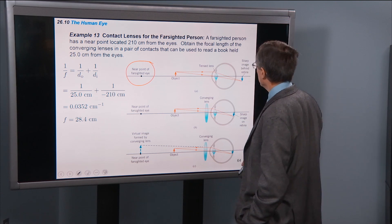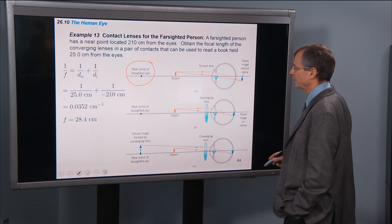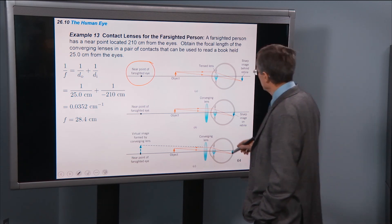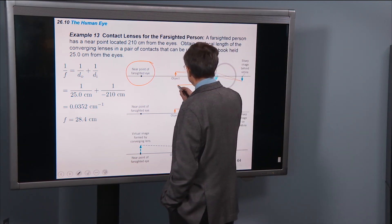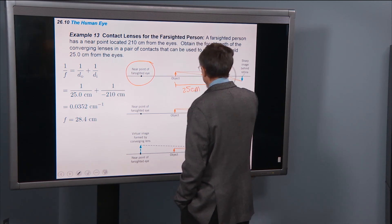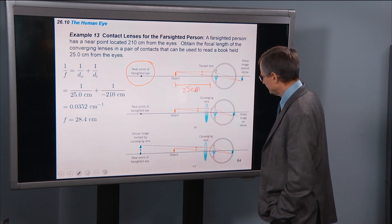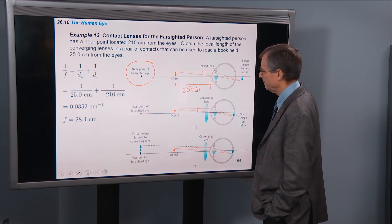And obtain the focal length of the converging lens in a pair of contacts that can be used to read a book held at 25 centimeters. So this now is going to be 25 centimeters away. And we want to place a converging lens there in order to be able to image that object.